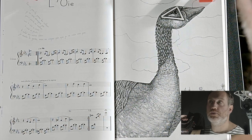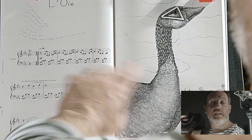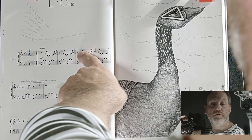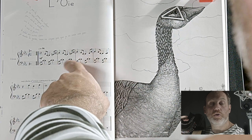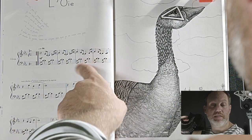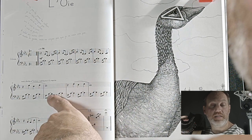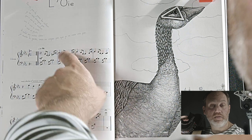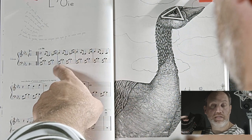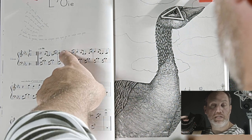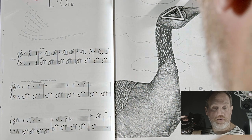Si vous regardez la partition, vous voyez qu'il y a toutes ces croches — les deux croches, à chaque fois, ce sont des intervalles de quarte. Des quartes qui montent, Fa-Si par exemple. Des quartes descendantes, Sol-Ré. Donc là, ça va être 3-pouce, et là ça va être pouce-3.